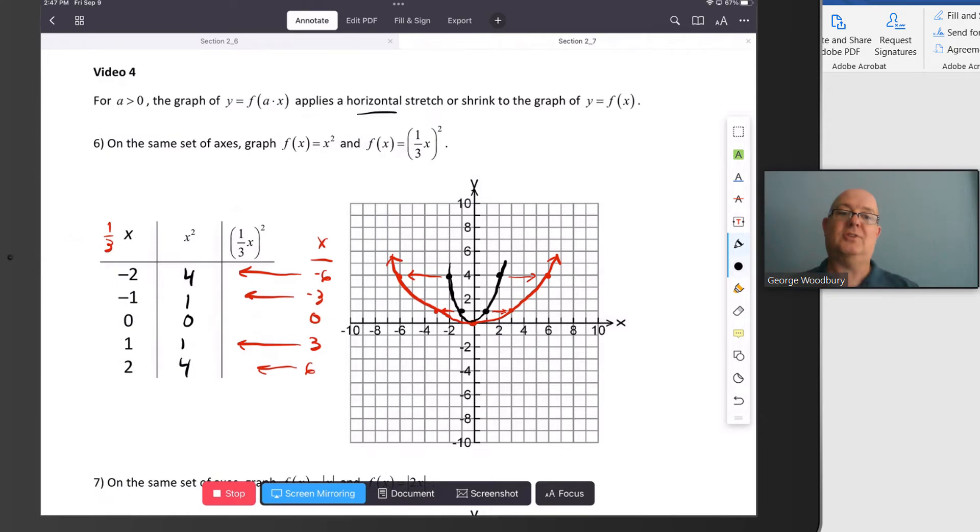Now depending on which way you look, this is like a half-full, half-empty glass kind of thing. You could also think of it as if the graph is being pulled down, because this function really is the same as one-ninth times x squared. So it's really a vertical shrink of one-ninth. But we can also think of it as a horizontal stretch by a factor of three.